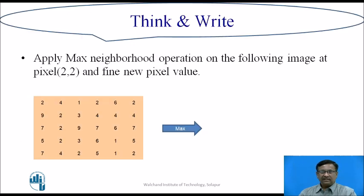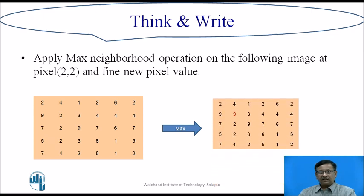Now there is a think and write exercise. Apply the max neighborhood operation on the following image at the center pixel value of position 2,2 and find the new pixel value using a 3x3 matrix, where the center pixel is 2. The filter mask consists of values 2, 4, 1, 9, 2, 3, 7, 2, 9. The answer is that the maximum value in the 3x3 neighborhood is 9. Therefore, the center pixel value 2 will be replaced by 9, and this is called the max neighborhood operation. Similarly, we can apply the other algorithms.